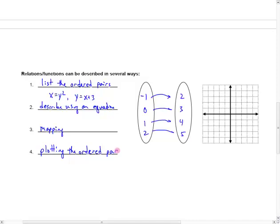So, for example, on that first one that we had, we had positive 4, 2. That was one ordered pair. And positive 1, 1, and 0, 0, and 1, negative 1, and 4, negative 2.